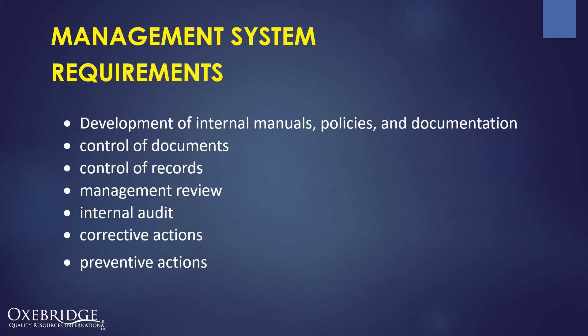These management system requirements break down to: general rules on how you'll develop internal procedures; how you'll control those documents to ensure people only have the latest approved revisions; how you'll control, maintain, protect, and preserve records; and then rules on management reviews, internal audits, corrective actions, and preventive actions.